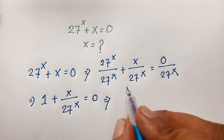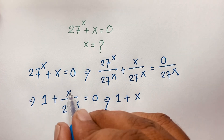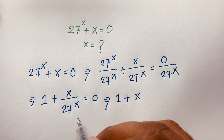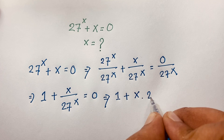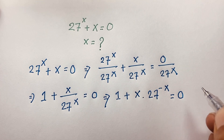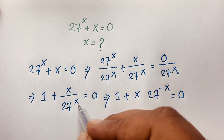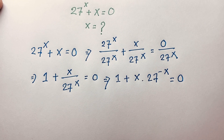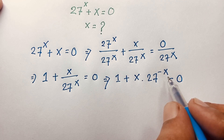Now we have 1 + x / 27^x = 0. According to the exponential law, x / 27^x can be written as x · 27^(-x). You know that 1 / a^n = a^(-n), so by this law, 1 / 27^x becomes 27^(-x).